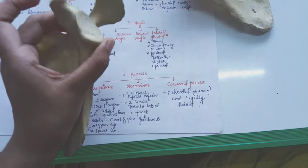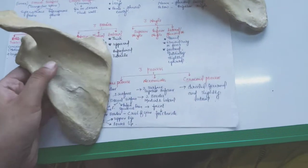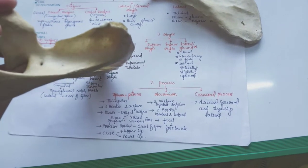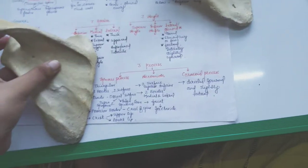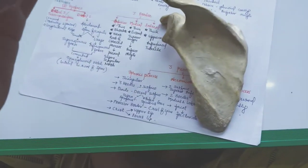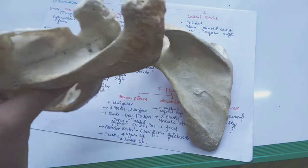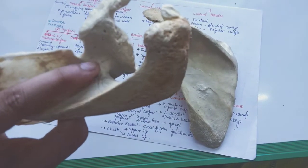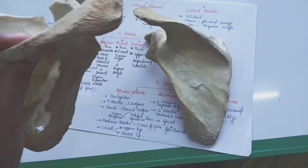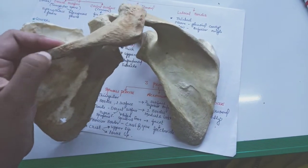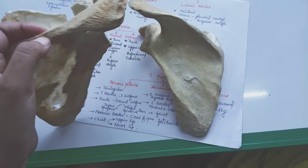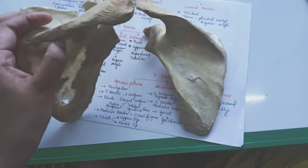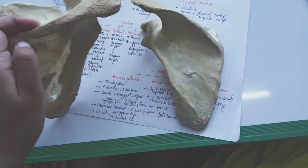Then the processes — it has three processes: the spinous process, the acromion process, and the coracoid process. The spinous process is a triangular plate with three borders: the anterior border, the posterior border, and the lateral border. It has two surfaces. The posterior border is also known as the crest of spine, and this crest of spine has an upper lip — trapezius is inserted in the upper lip — and a lower lip where deltoid originates.